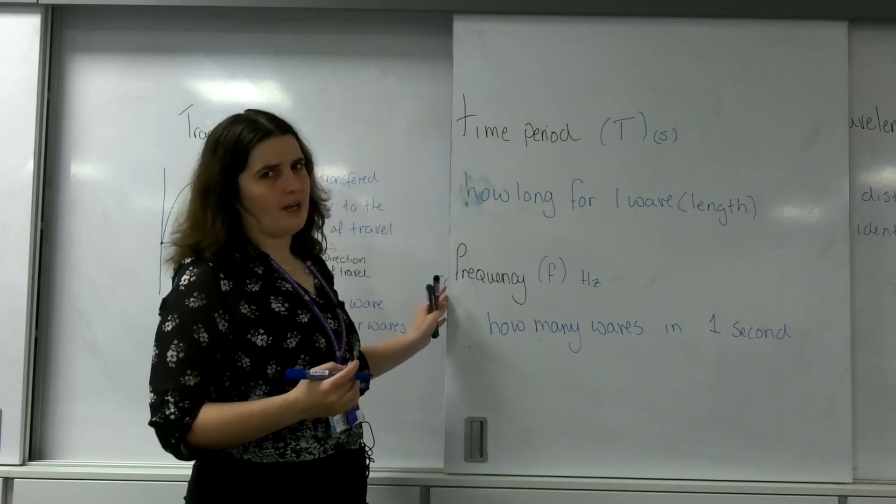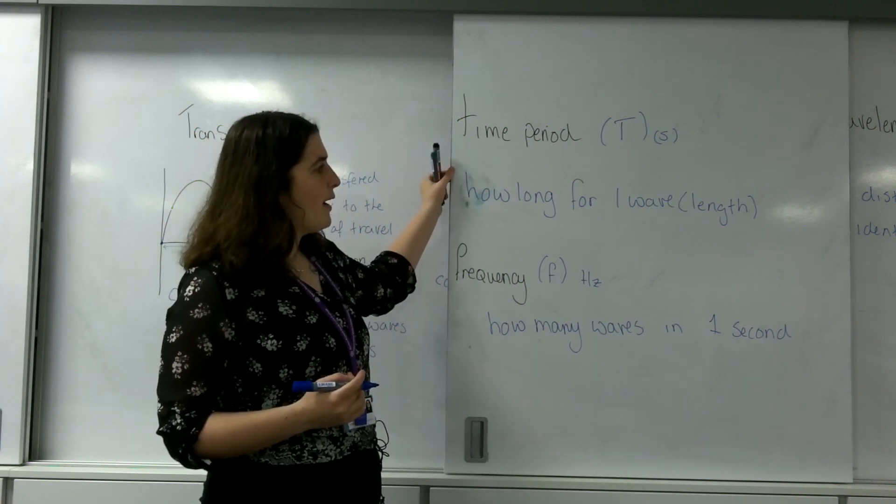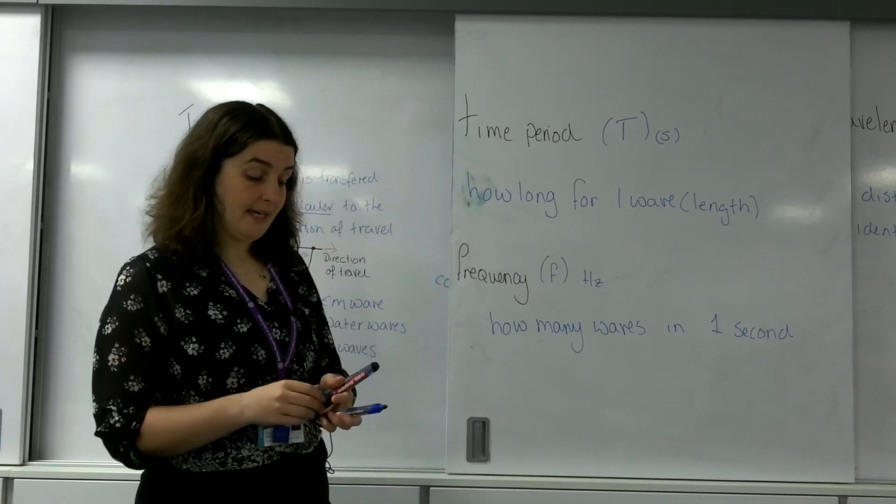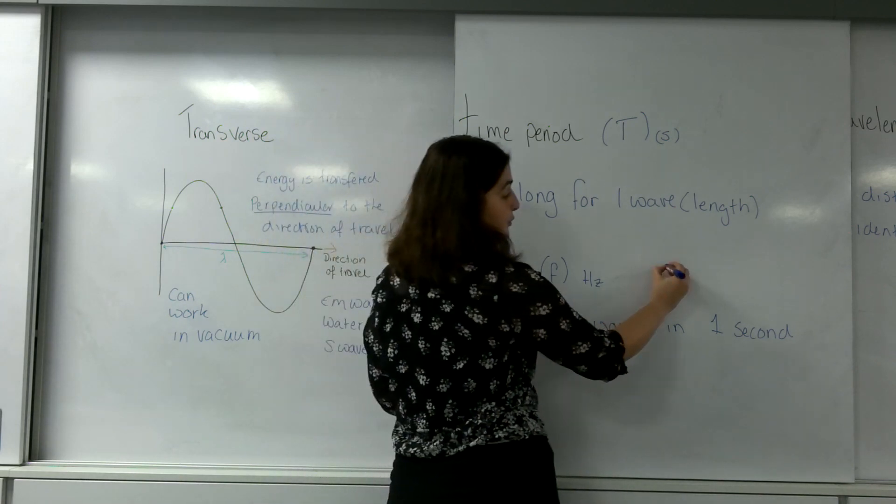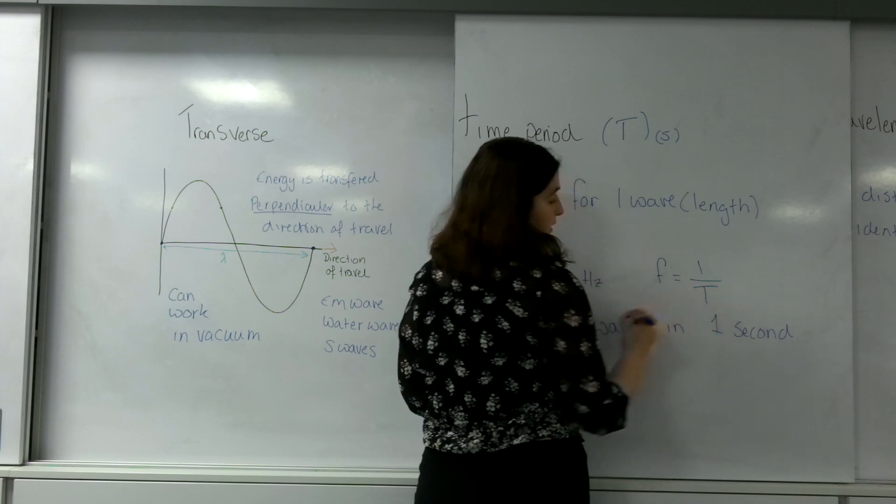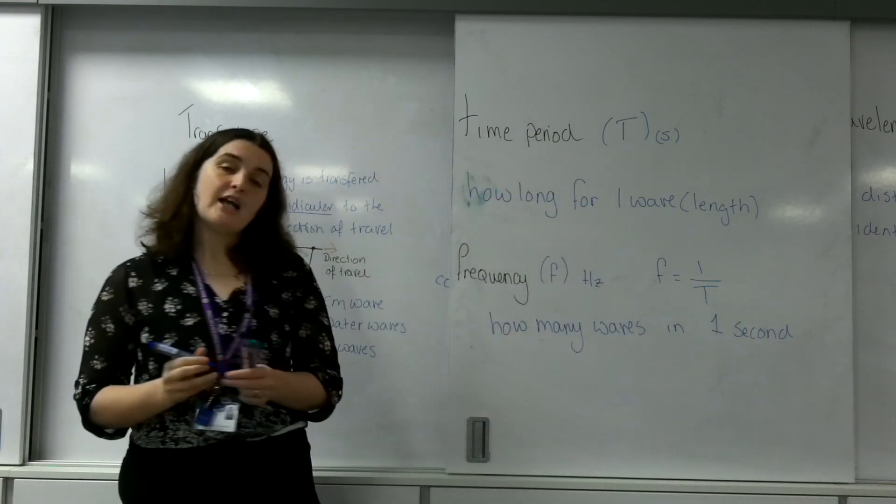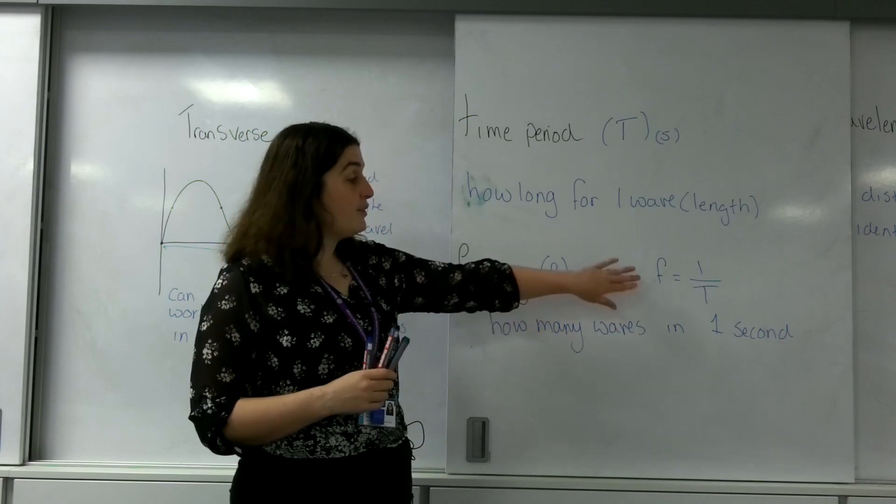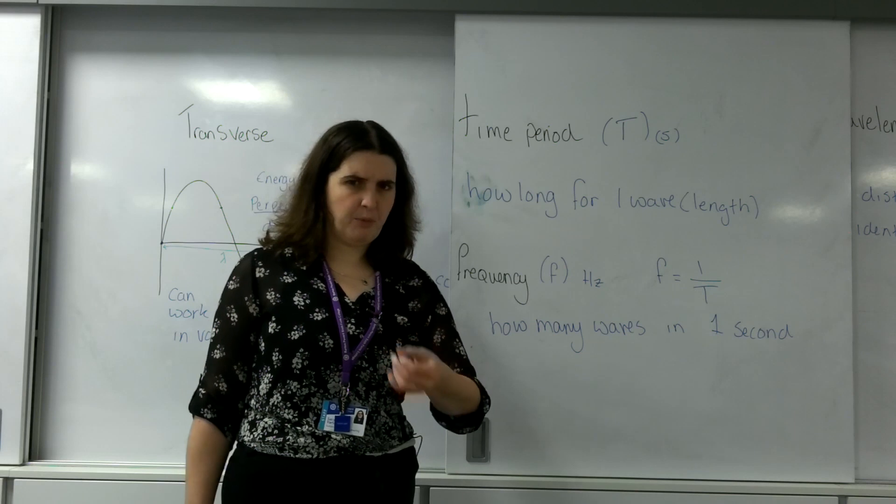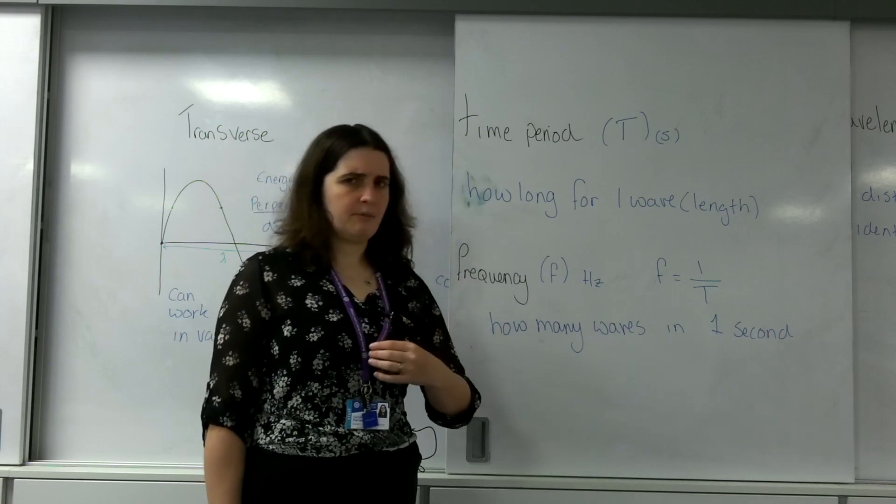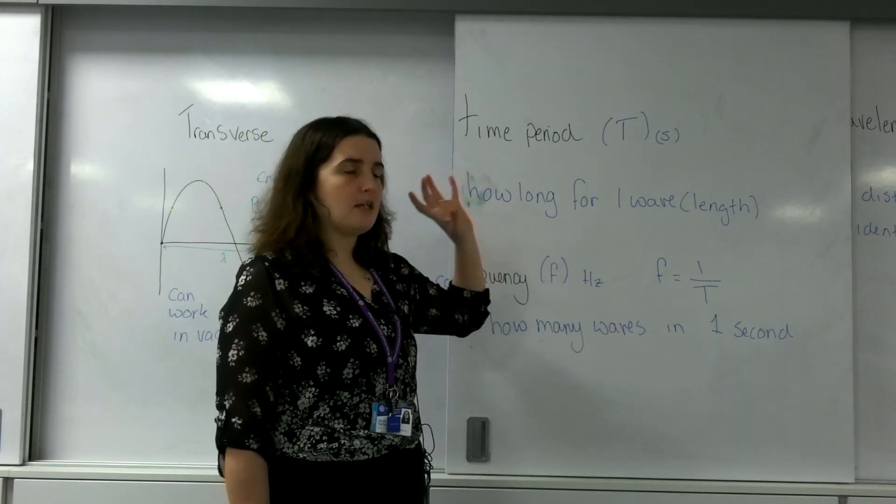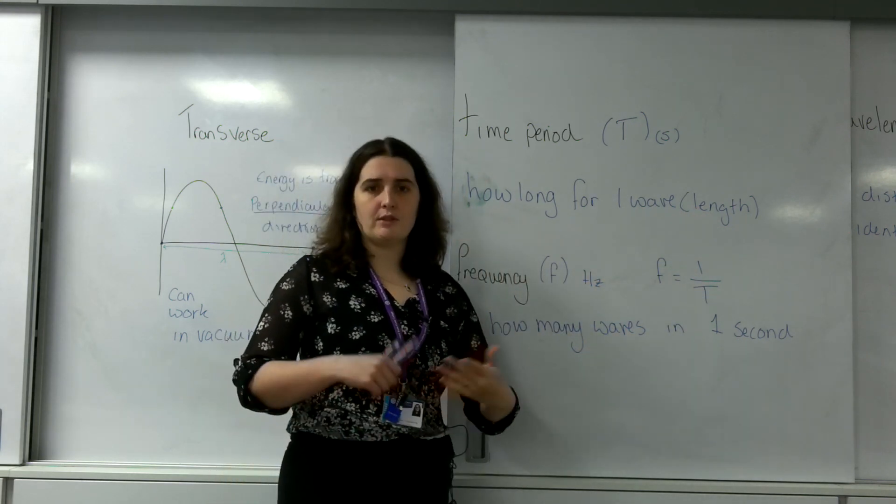These two are very much linked together. How long for one wave and how many waves in one second are related by this formula here: the frequency is one divided by the time period. You can see these equations on your data sheet. This formula is immensely important, not just for waves, but for things like simple harmonic motion, circular motion, etc. Please be aware this frequency is one over time period is extraordinarily important for the rest of the A-level course.